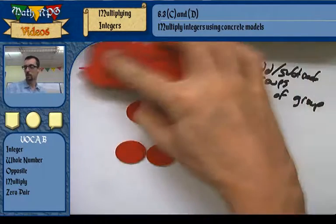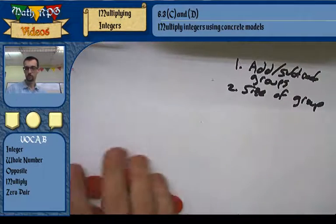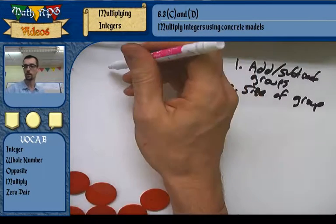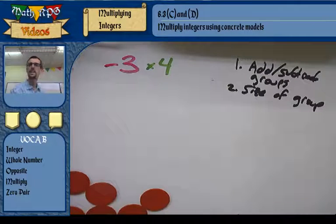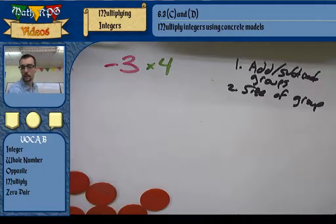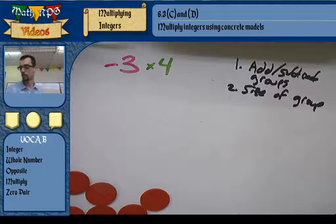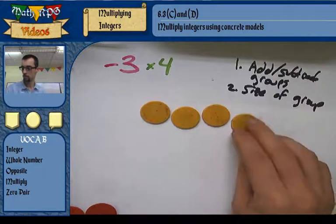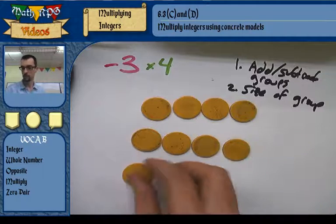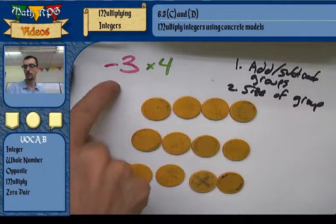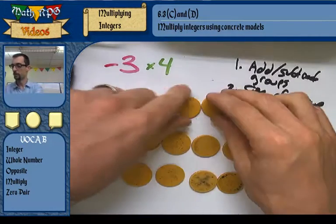Now it gets tricky — the first factor is going to be negative: negative 3 times 4. It's very difficult to talk about negative groups. What does a negative group of ducks look like? So I offer the interpretation of thinking of this number as 'the opposite of.' This would be the opposite of 3 groups of 4. So I make 3 groups of 4, I get 12, and then I take the opposite of it — I flip them all over.